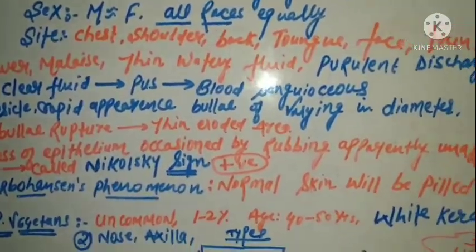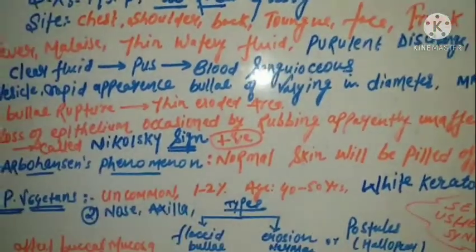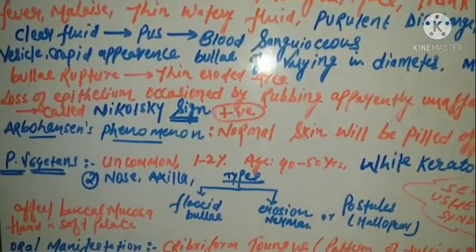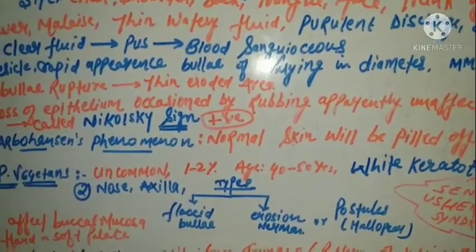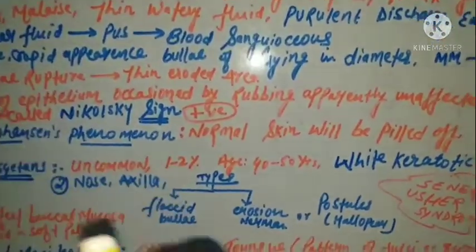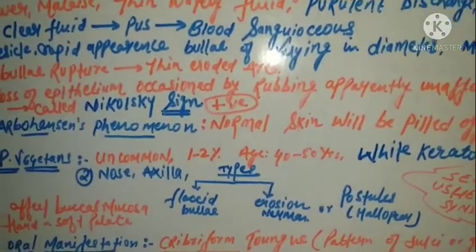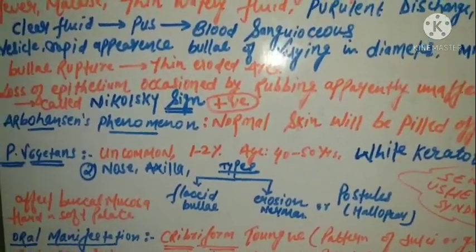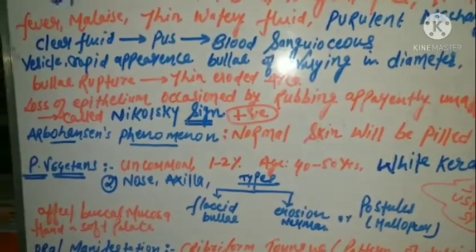The bullae show rapid appearance with varying diameter from millimeters to centimeters. Once the bulla ruptures, a thin eroded area is left behind — the skin gets eroded. There will be a thin margin that becomes eroded, similar to any vesicle that ruptures and leaves behind an eroded layer.